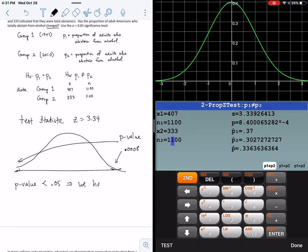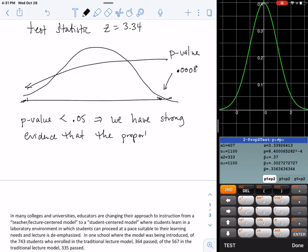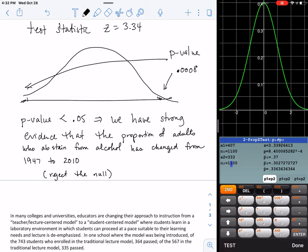So this is saying we have strong evidence, because it's such a small p-value, that the proportion of adults who abstain from alcohol has changed from 1947 to 2010. And in this case, we do reject the null. But nobody ever says that in reports. But we have evidence that there's a difference.